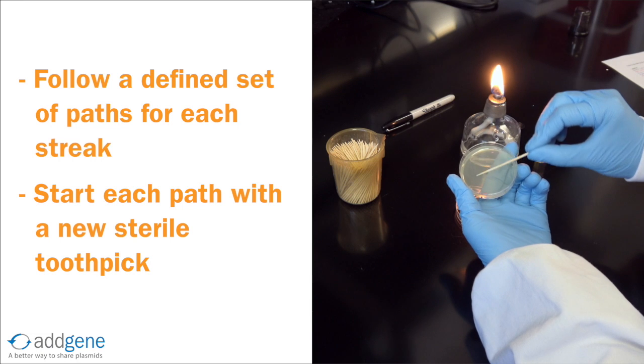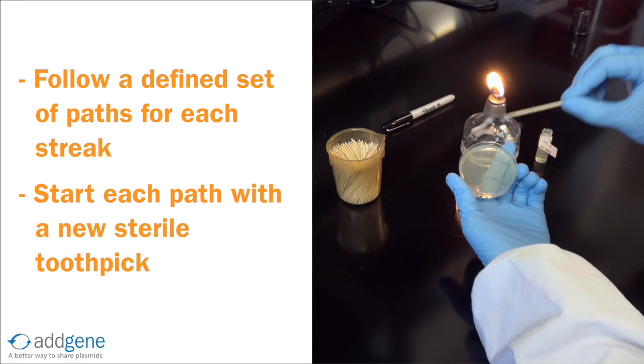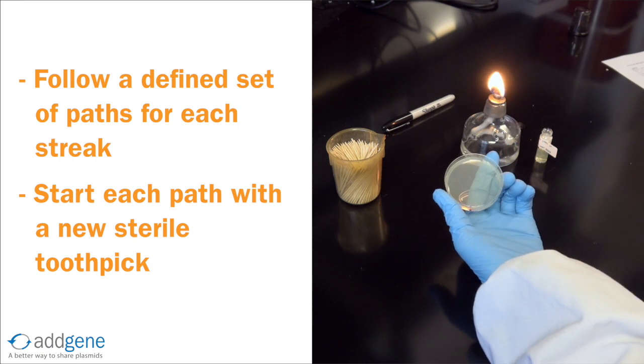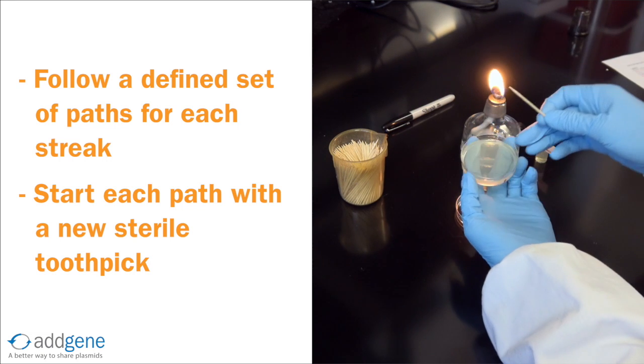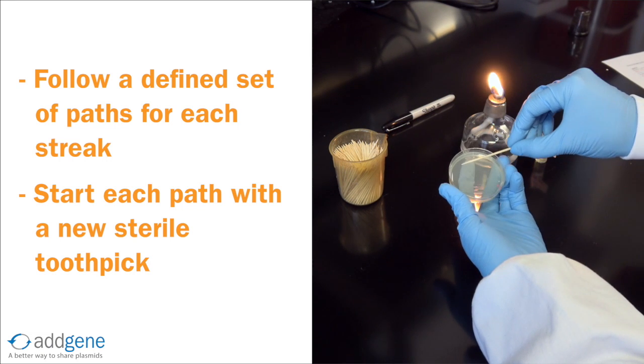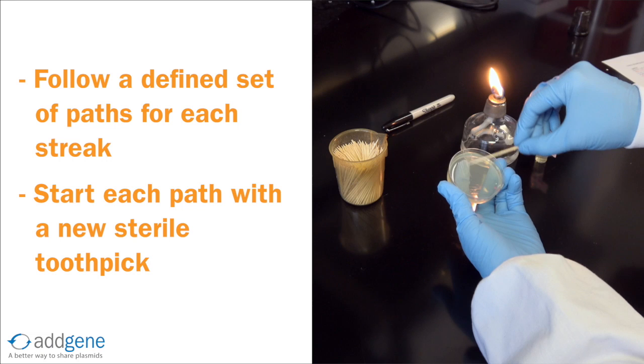With the first toothpick, we gently streak back and forth across roughly one third of the plate, taking care to avoid the edges. We then dispose of the first toothpick, turn the plate, and use a new sterile toothpick to start streaking a new path from where we left off.